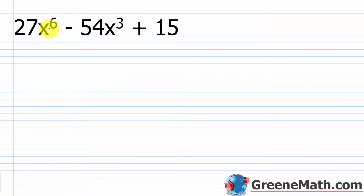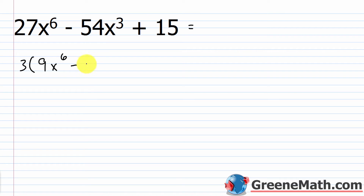Let's take a look at another example: 27x to the sixth power minus 54x cubed plus 15. Before doing anything, notice that everything here is divisible by 3, so I want to pull that out. Pulling out a 3 gives 3 times (9x to the sixth minus 18x cubed plus 5). I just want to factor what's inside the parentheses, and we can again use substitution.